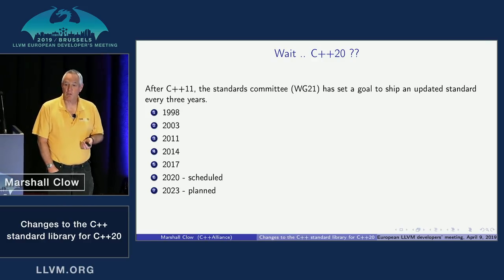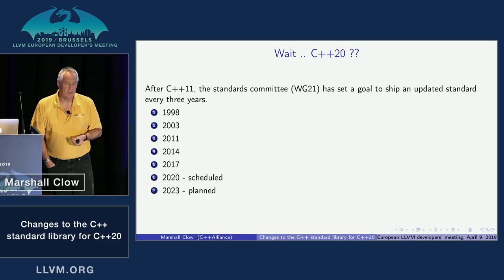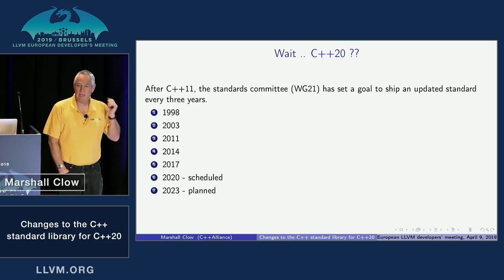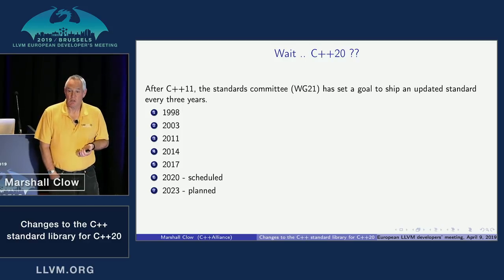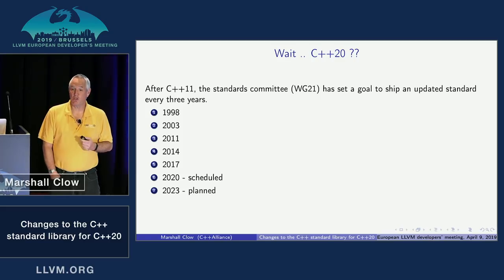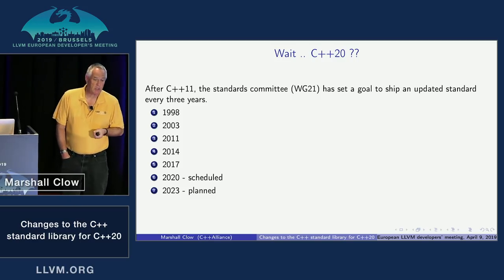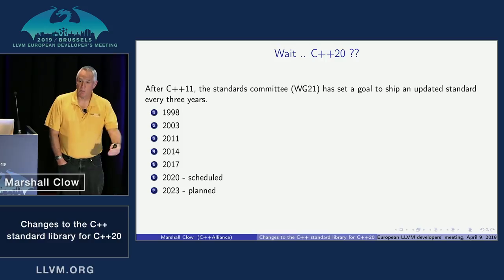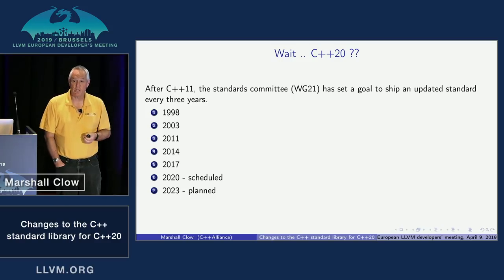Then came the long death march toward C++0X, which was supposed to ship around 2007 but waited and waited and eventually became C++11. Nobody in the standards committee wants to repeat that. After that, there was a policy change — a goal to have regular smaller releases every three years. We nailed that for 2014 and 2017, and it's looking like we'll do it again in 2020.